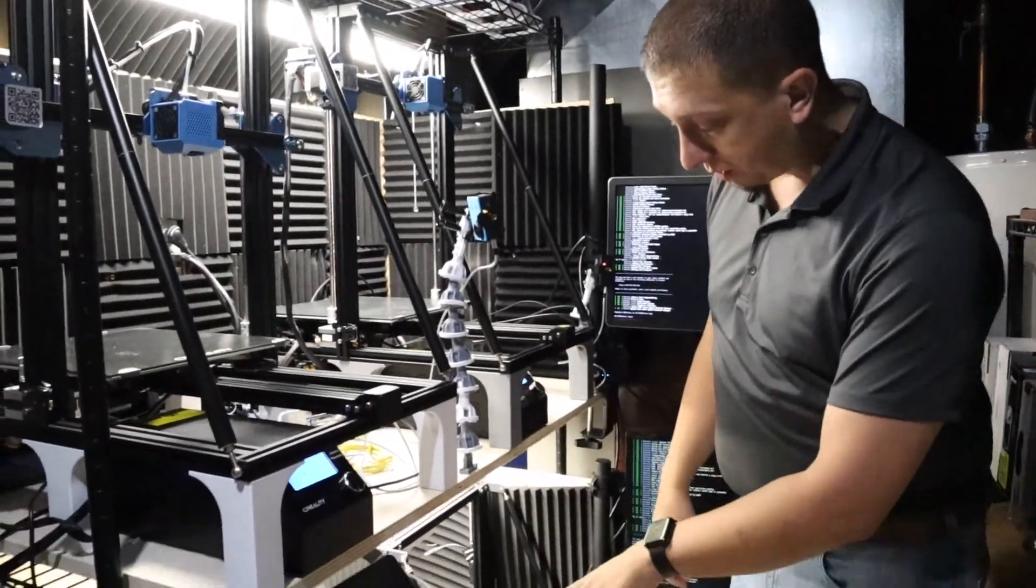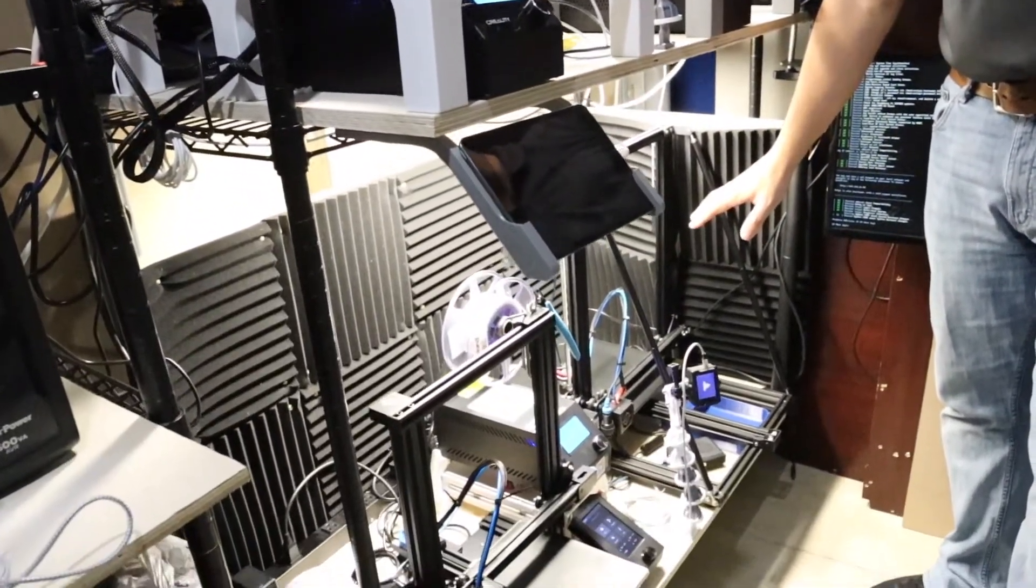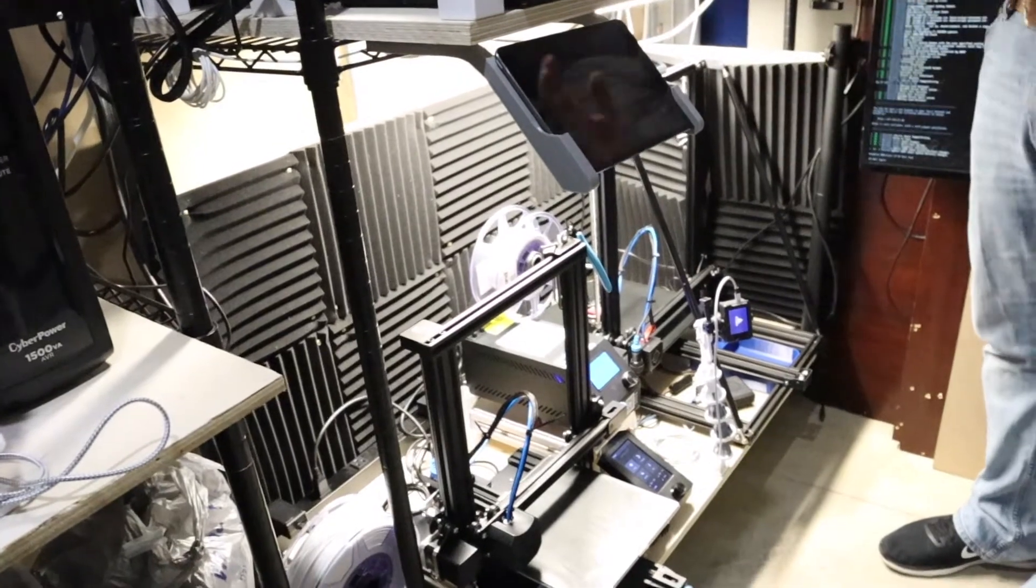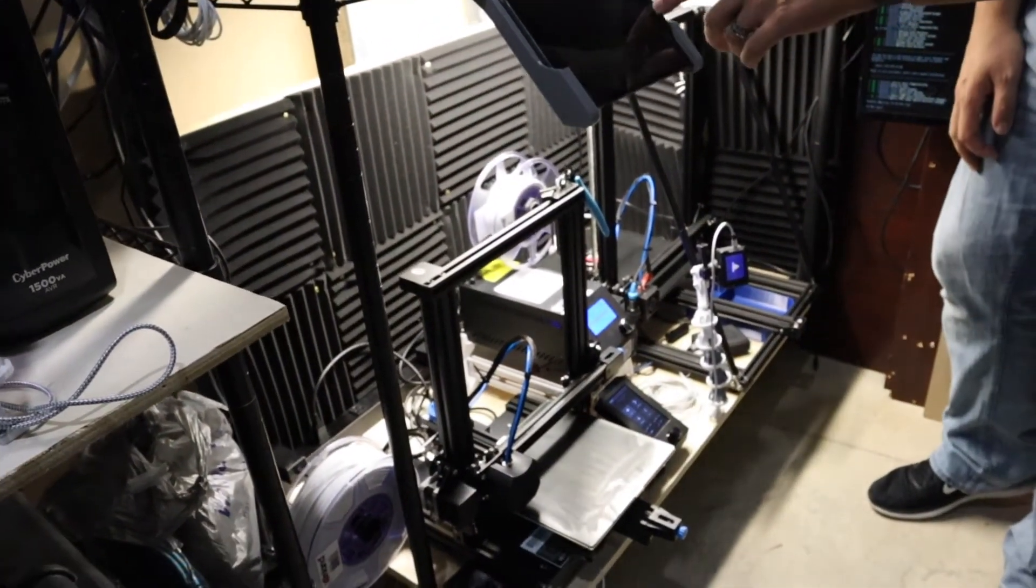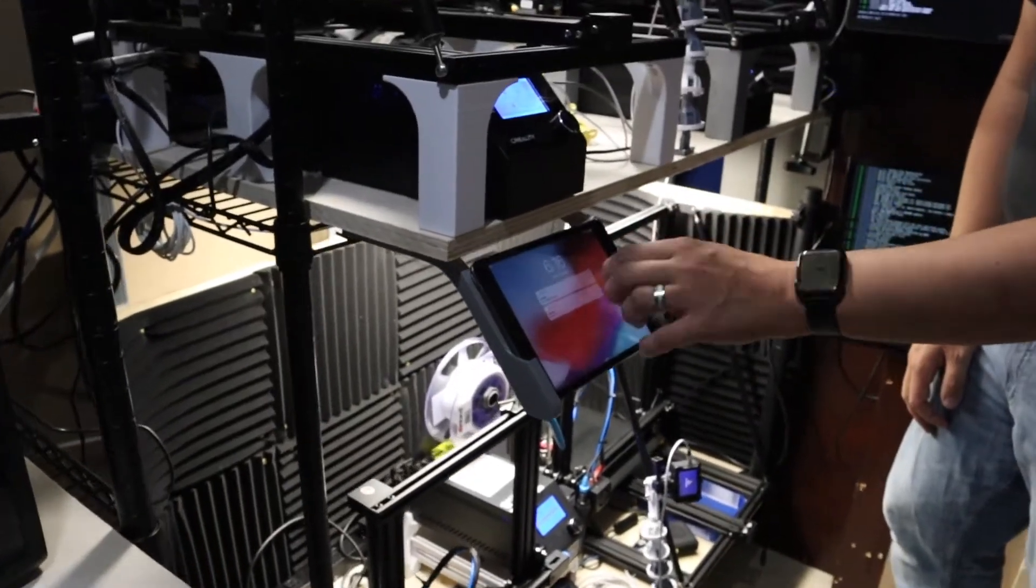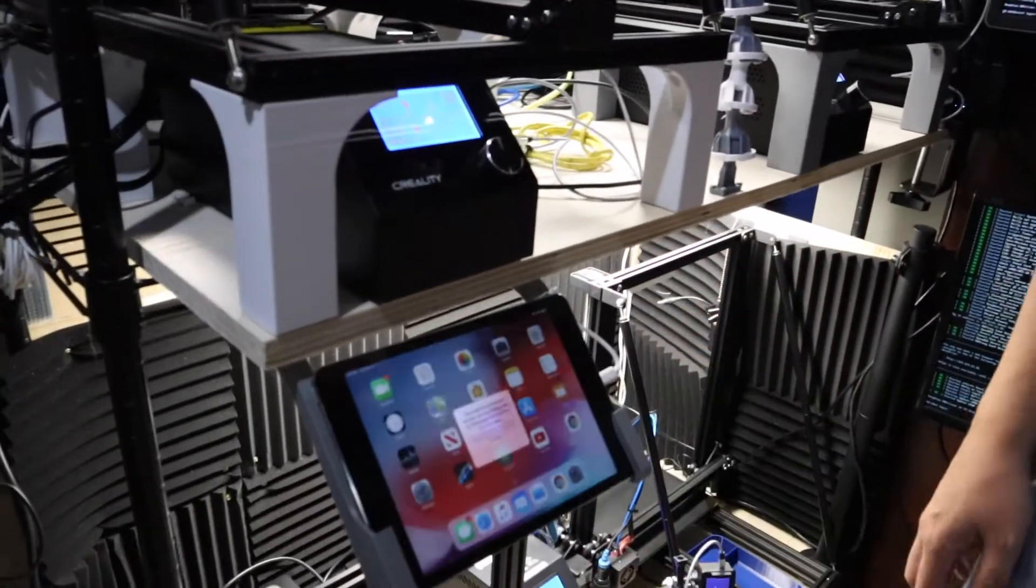Even down on the lower shelf, we've got the CR10 V1 that used to do a lot of the backbone of this channel until I got these newer guys. And the Ender 3 V2 in its home. And of course, I'm using Octoprint, so I've got stuff rigged in here so I can control it from the iPad.